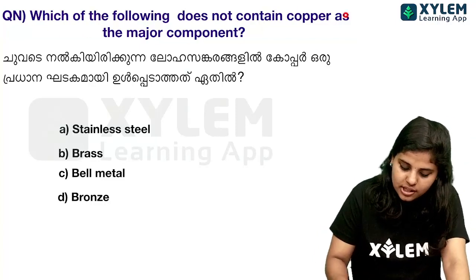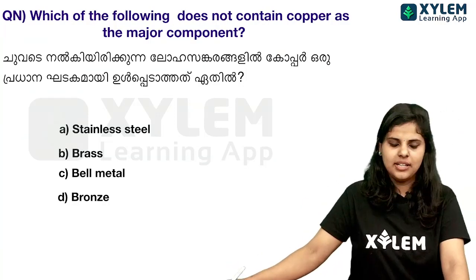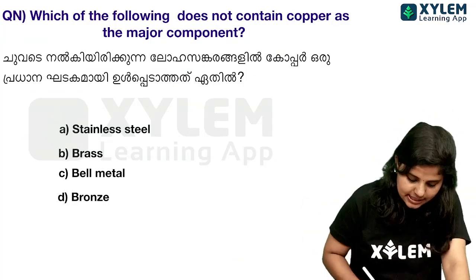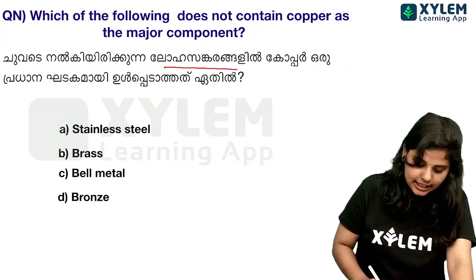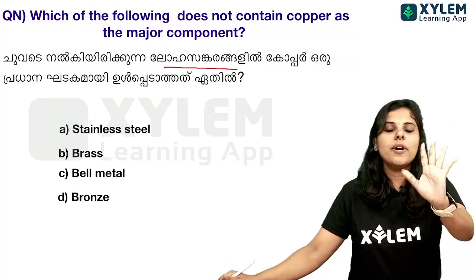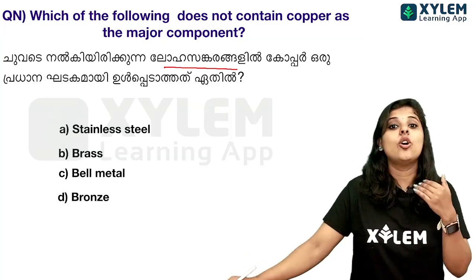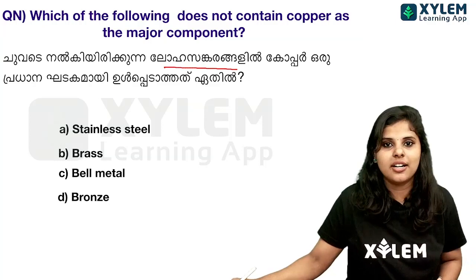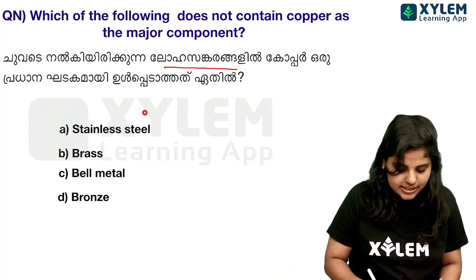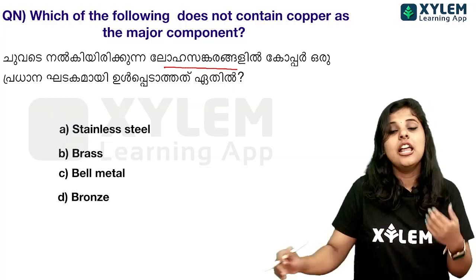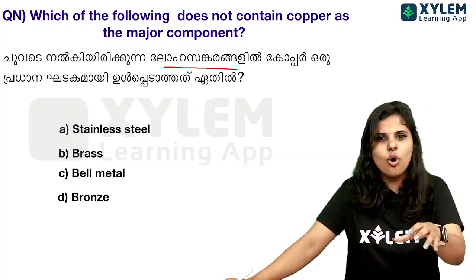Next question: Which of the following does not contain copper as the major component? The options include various alloys. The answer is stainless steel, which does not have copper as its major component.